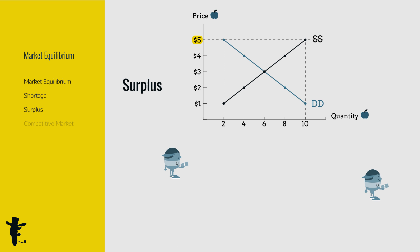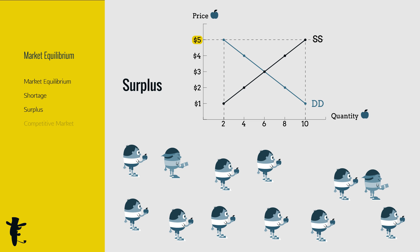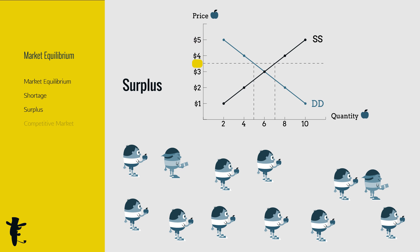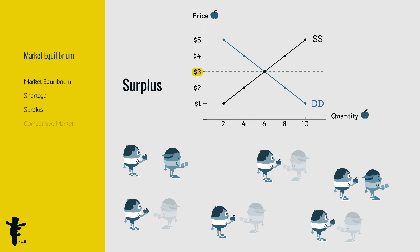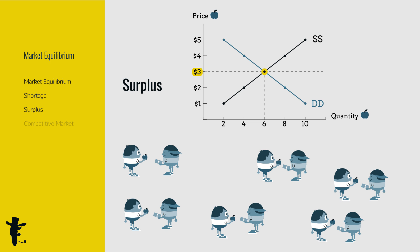With so few buyers, better drop your price or risk not selling your apples at all. As price drops, some sellers drop out and more buyers enter, bringing us back to market equilibrium.